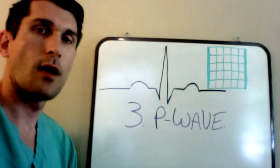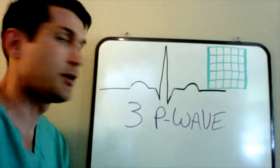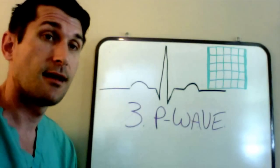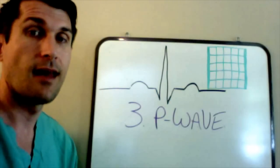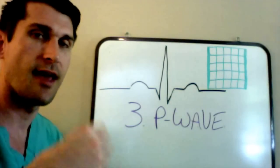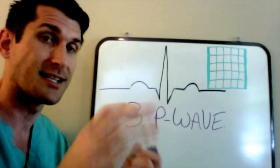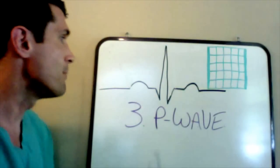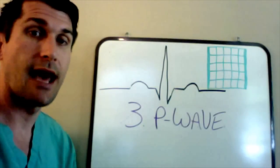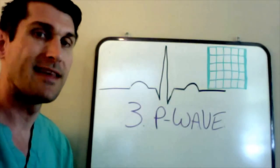Step three is to look for a P wave. A P wave should occur before every QRS. Ask: are there P waves, do they appear before each QRS, and is there a QRS for every P wave? If there isn't, we might suspect a block — the signal originates in the sinoatrial node, travels through the AV node where it's slowed down to allow the atria to fill the ventricles before they contract. A missing P wave could indicate a block of different degrees.